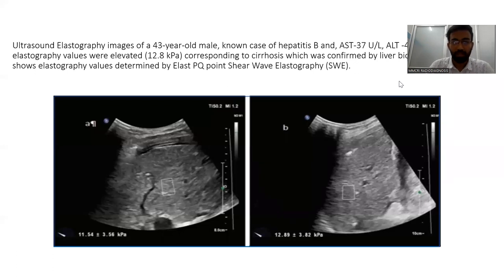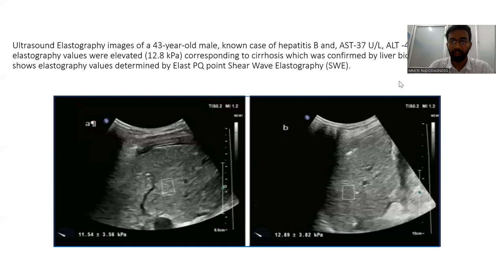These are ultrasound images from which the elastography score was acquired. The elastography score is shown in the bottom left of both images. These were obtained using ElastPQ point shear-wave elastography for a patient with chronic hepatitis B, with AST value of 37 and ALT value of 41. The elastography score was 12.8 kilopascals, corresponding to cirrhosis, which was confirmed by liver biopsy.